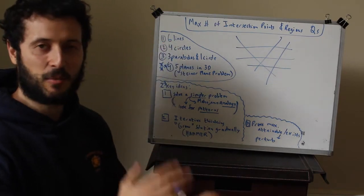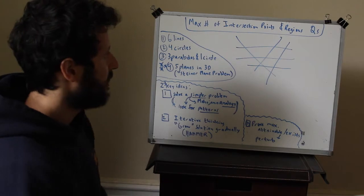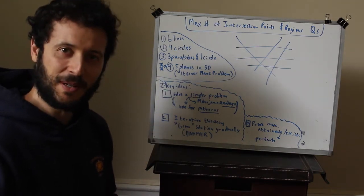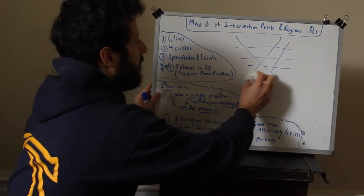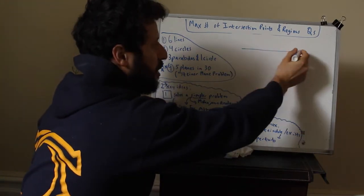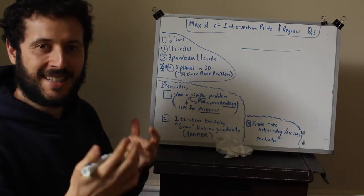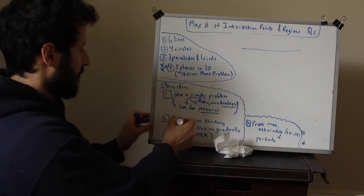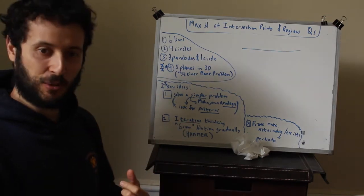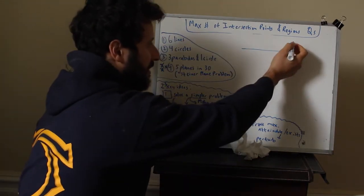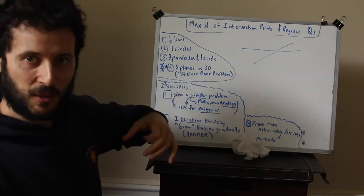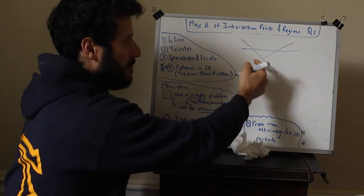What's simpler than six lines? Six lines is too hard — so why don't we try two lines? One line is not very interesting, but two lines is where we start getting into it. That's the iterative thinking idea — related to building our solution gradually. So let's add a second line: everybody would agree that's the best we can do with two lines, one intersection point. Now let's add a third line — I think you'd agree we can't do any better than three points.